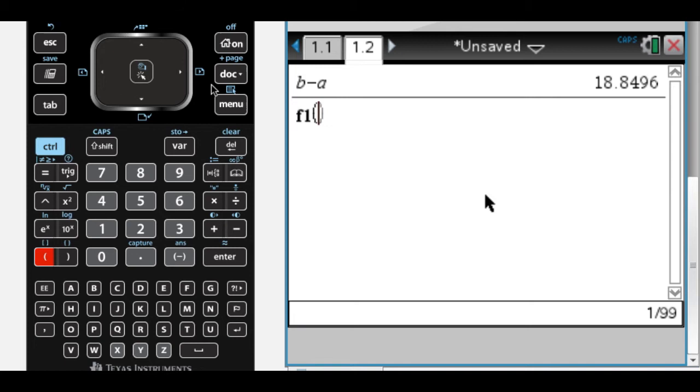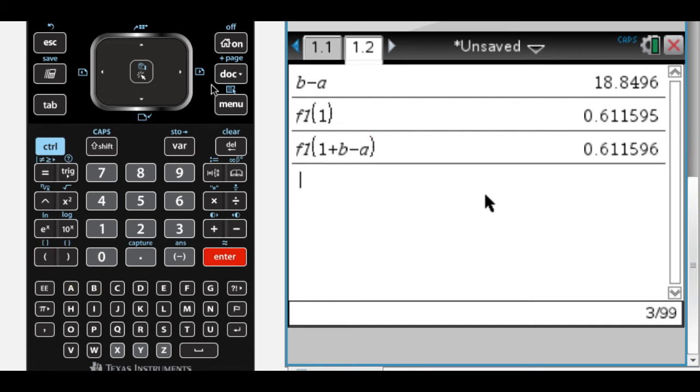And to test that, what I can do is, if I do F1 of one, that's what I get. If I do F1 of one plus B minus A, so if I add the period, I should get the same thing again, and I do. So I think I found the period.